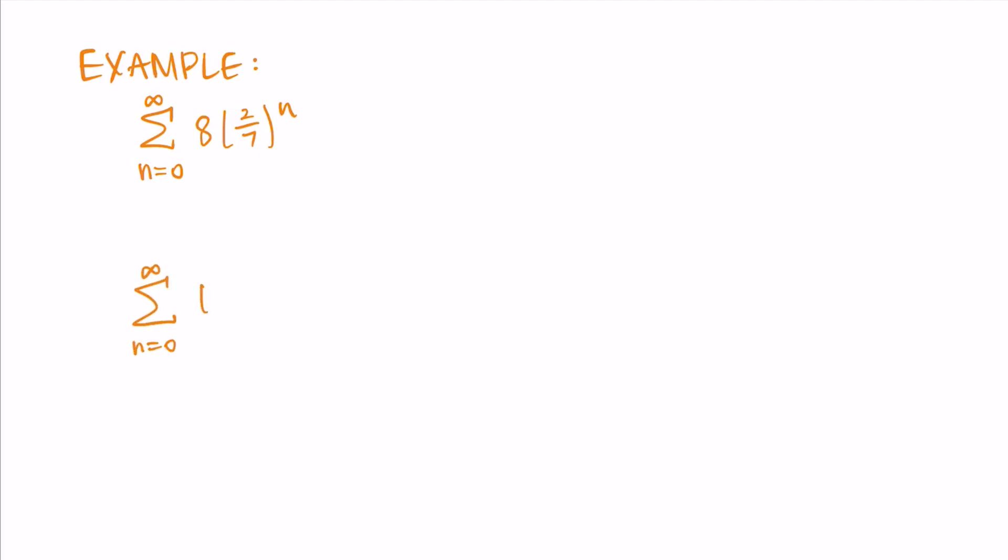And then I also have the sum from n equals 0 to infinity of (-5)^n. So both of these are geometric series because they're in the form ar^n.